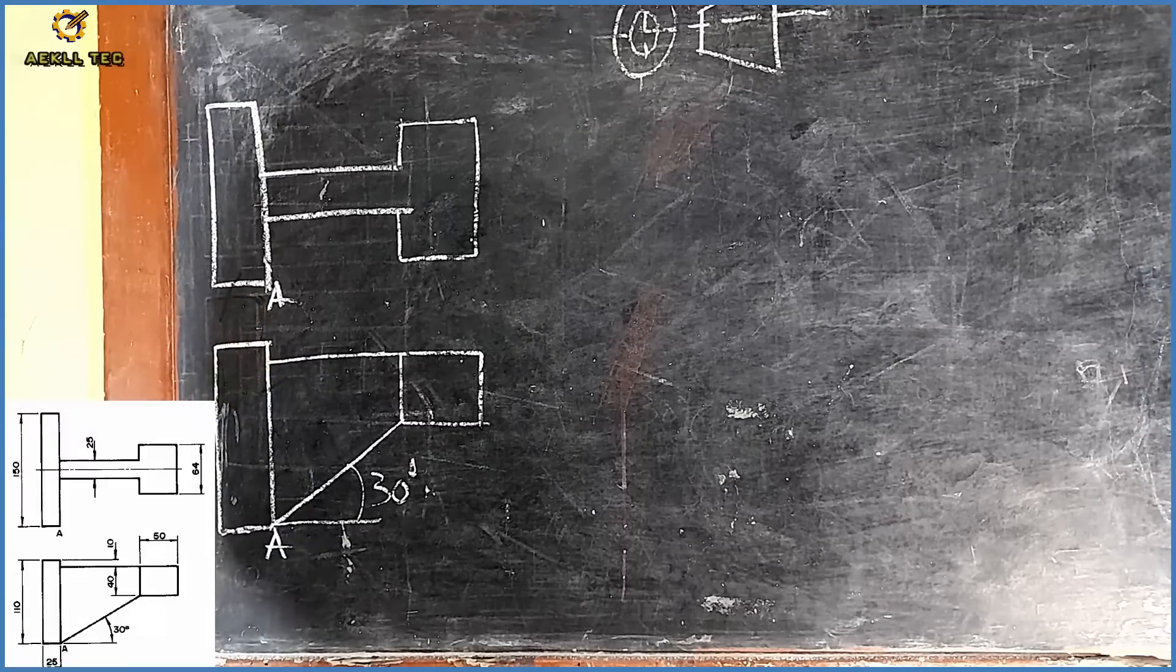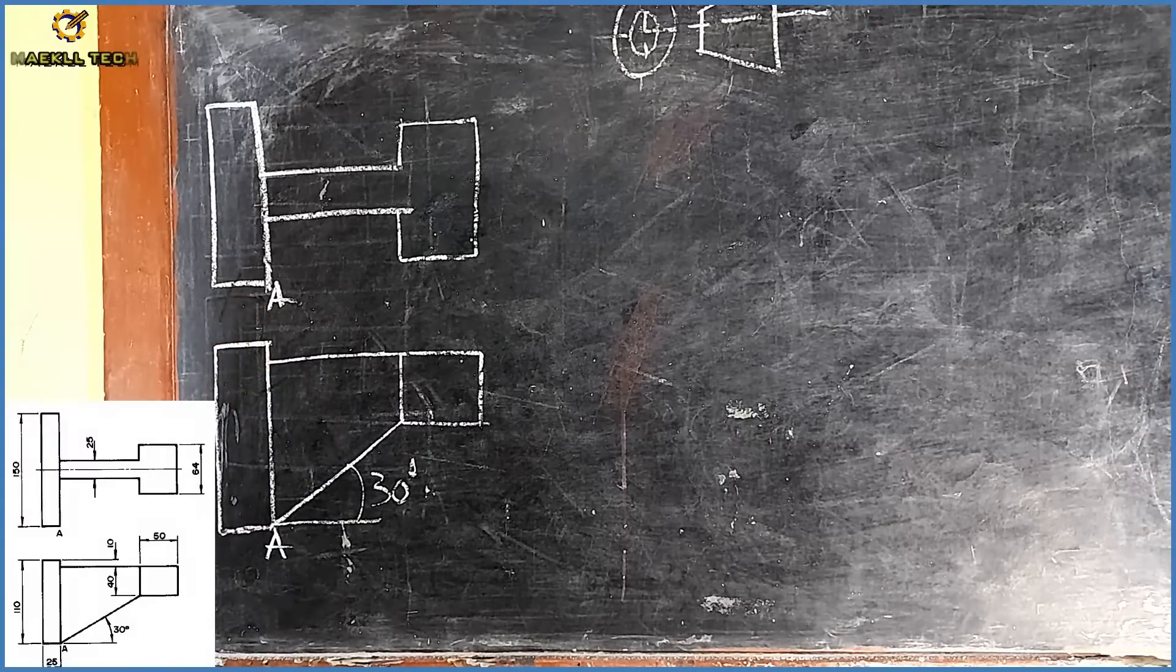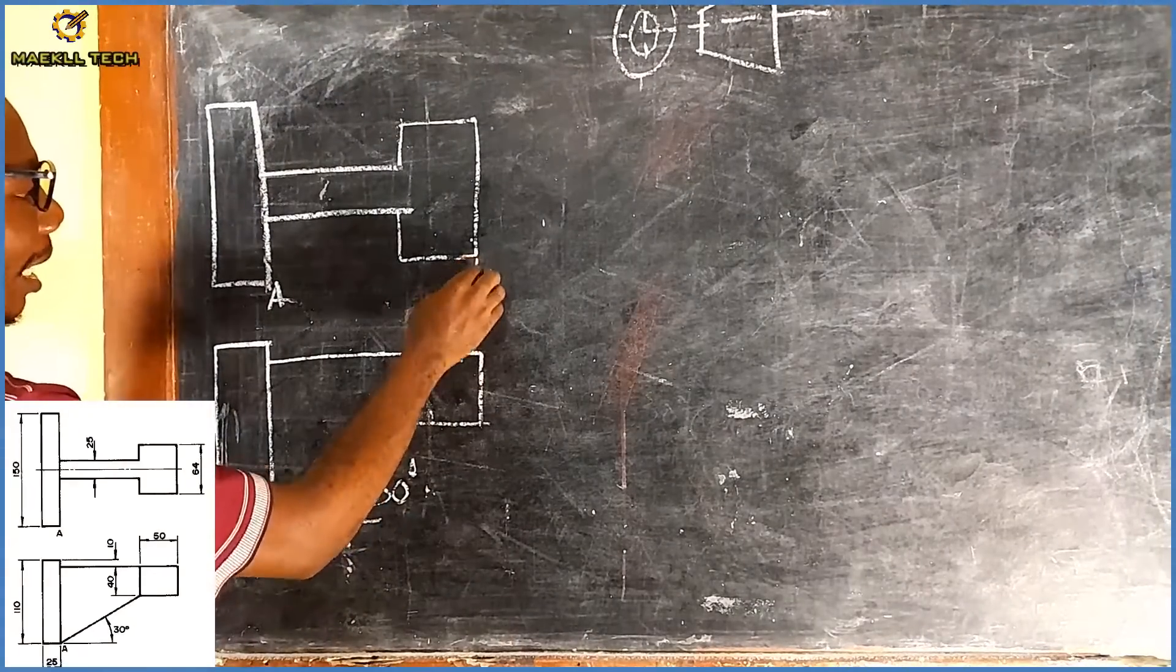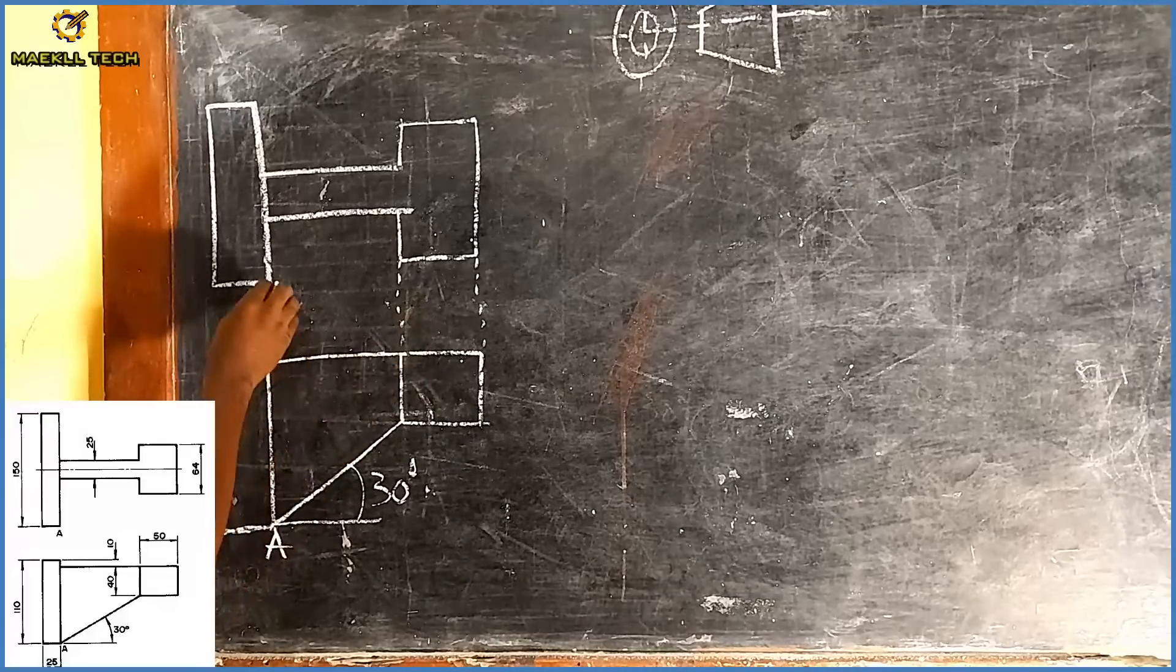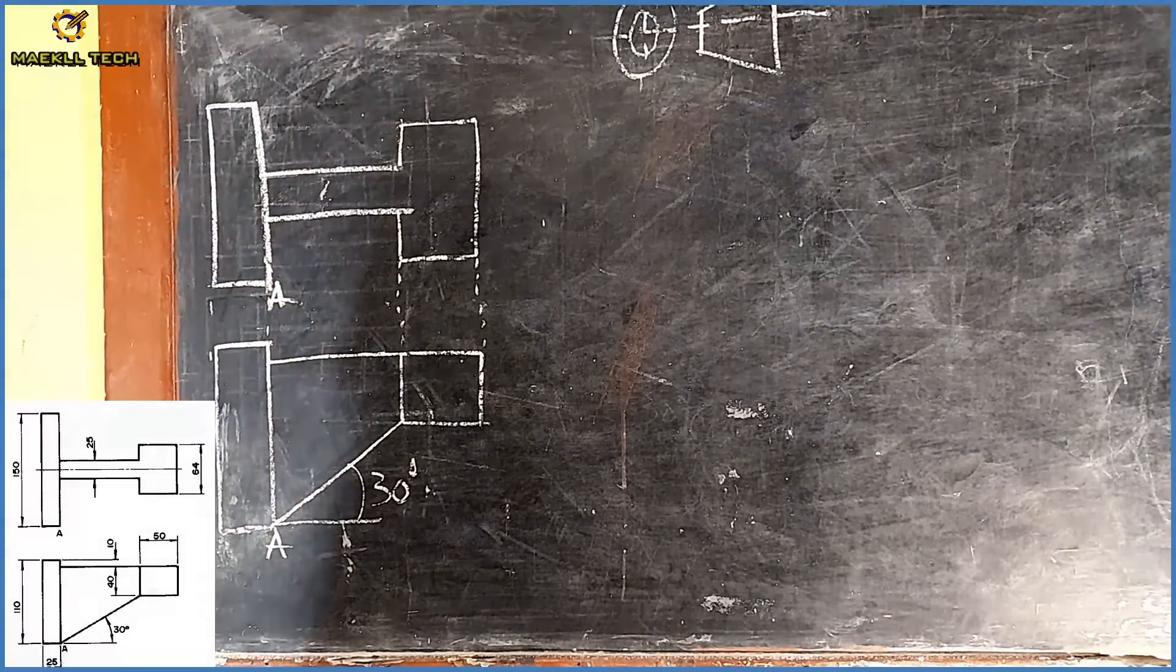Before you proceed, don't forget the principle of tracing from previous videos. Take note that this area aligns with this area, this area aligns with this area, and this area aligns here and here. That should give you a picture of how this object looks.